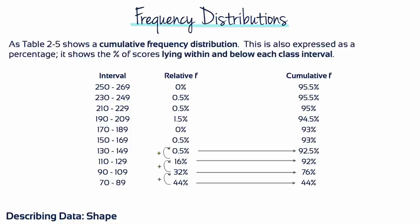In Table 2.5, look at the column in the middle representing relative frequency. We begin with the frequency in the bottom interval, 44%. 44% plus 32% gives us a cumulative frequency of 76%.